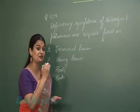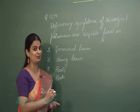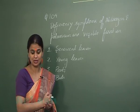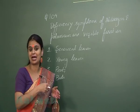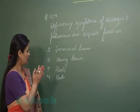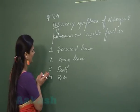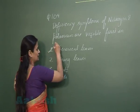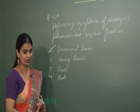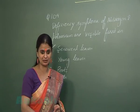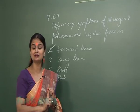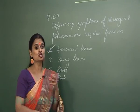So the first deficiency of a mobile element will appear in the senescent leaves, because from there the mobile elements have been transported to the young leaves. The right option is senescent leaves. Nitrogen, phosphorus, and potassium are mobile elements, so their first deficiency symptoms are seen in senescent leaves.